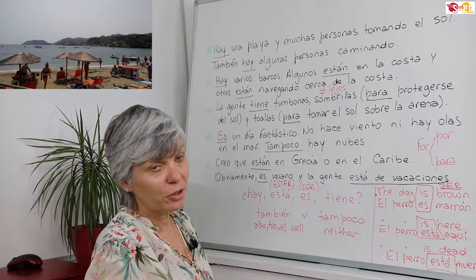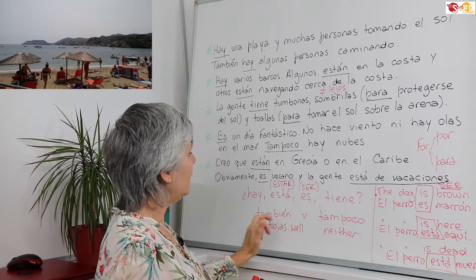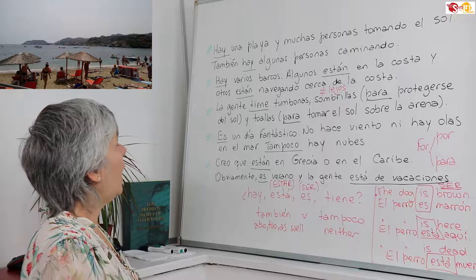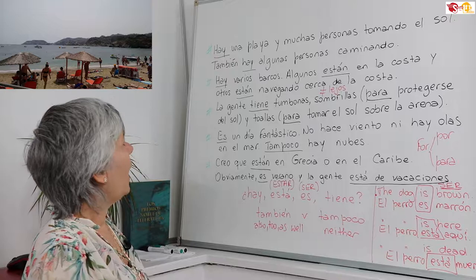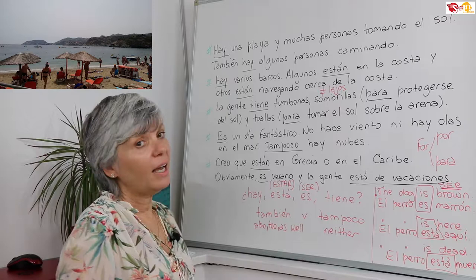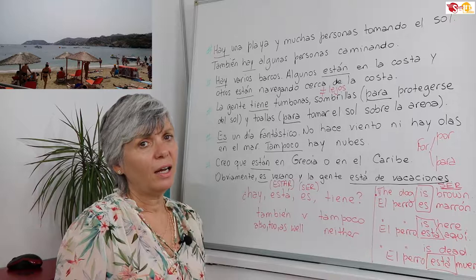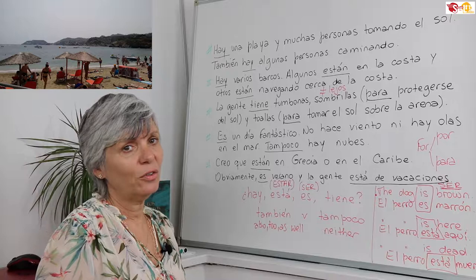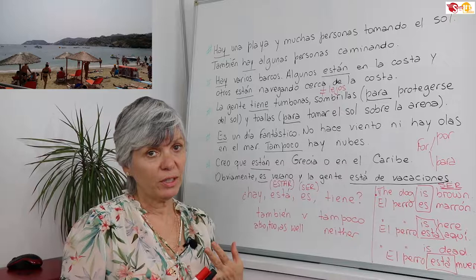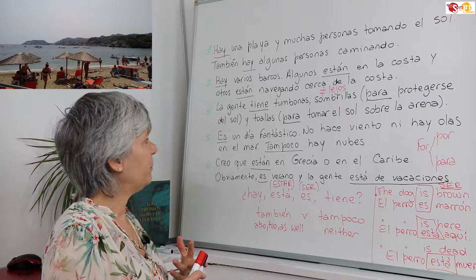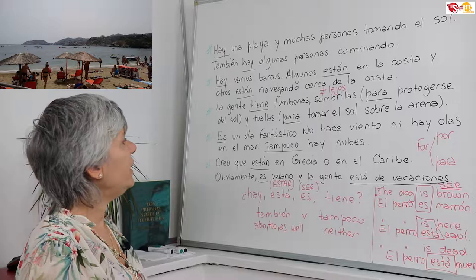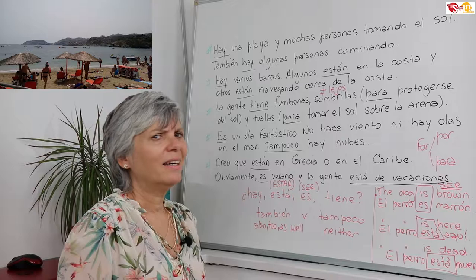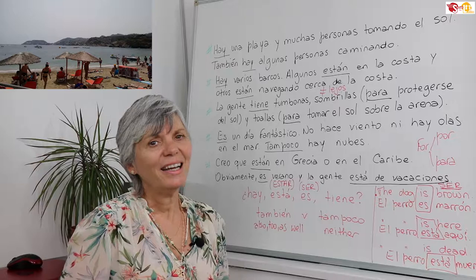Now you have a whole description of a photocard using hay, está, es, tiene, también y tampoco. Let's see the full description: Hay una playa y muchas personas tomando el sol. También hay algunas personas caminando. Hay varios barcos. Algunos están en la costa y otros están navegando cerca de la costa. La gente tiene tumbonas, sombrillas para protegerse del sol y toallas para tomar el sol sobre la arena. Es un día fantástico. No hace viento ni hay olas en el mar. Tampoco hay nubes. Creo que están en Grecia o en el Caribe. Obviamente, es verano y la gente está de vacaciones.